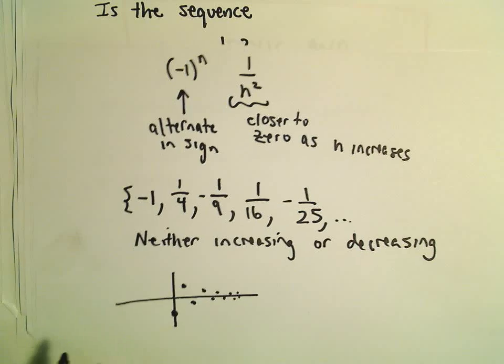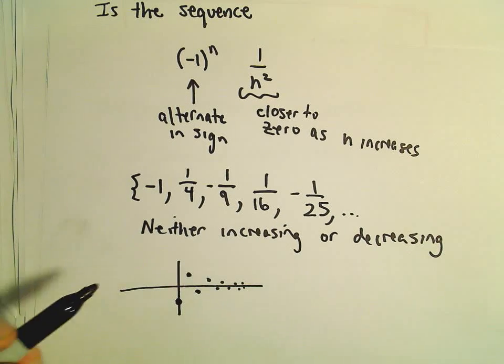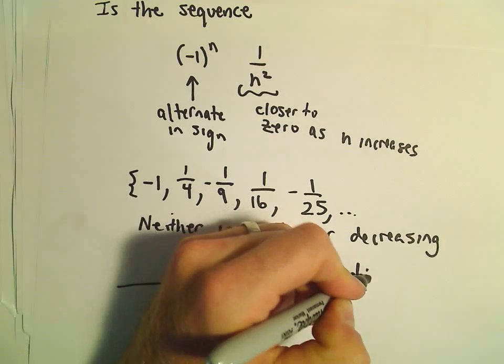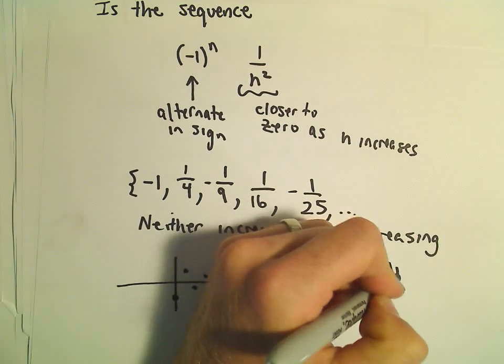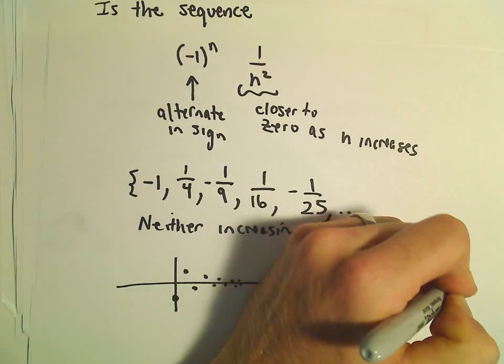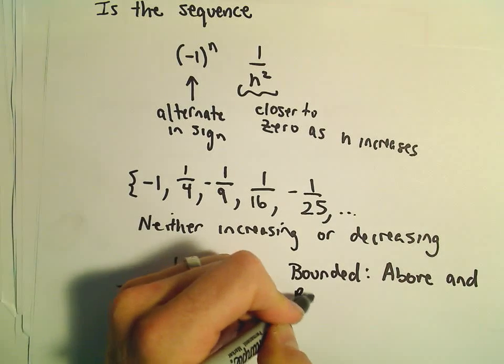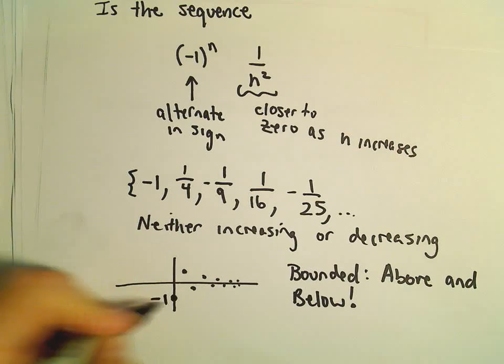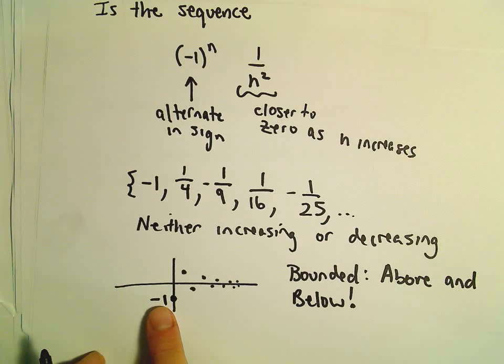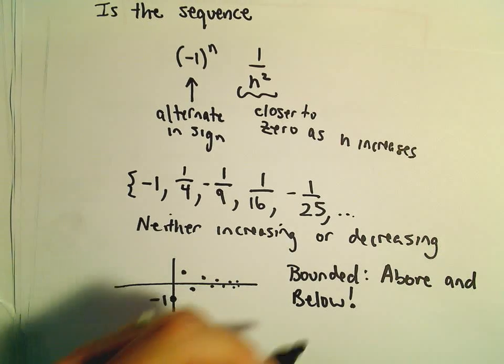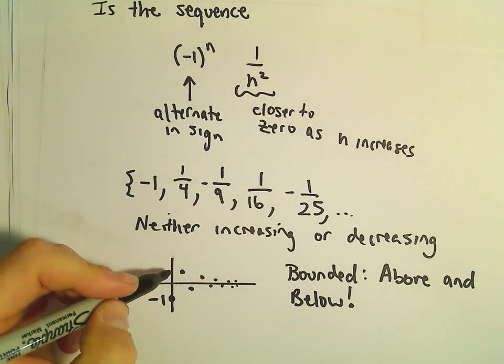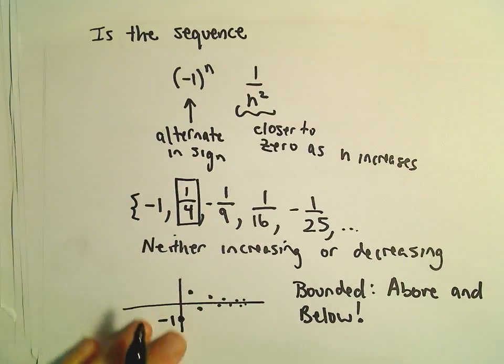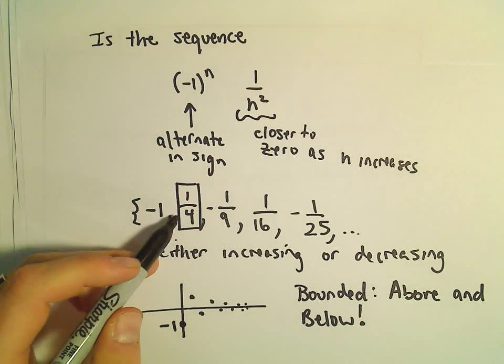But if you think about it, it certainly looks like it is bounded. It's going to be bounded both above and below. It looks like it's bounded below by -1, and then it's bounded above—the biggest positive number you would ever get out of our sequence would be positive 1/4.